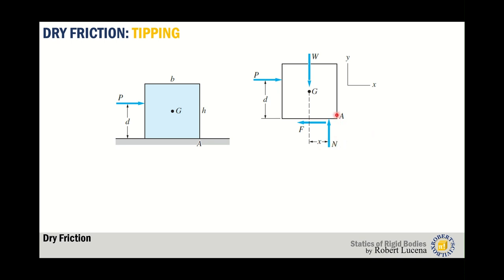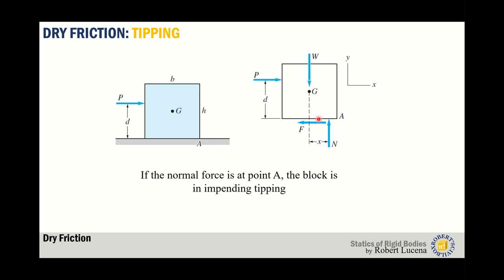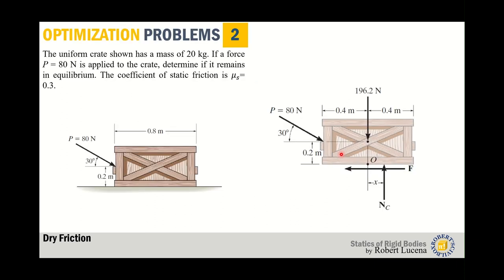We can also check for tipping. If the location of N is at point A, the block will be in impending tipping. If N is located inside the base, the box will not be in impending tipping.